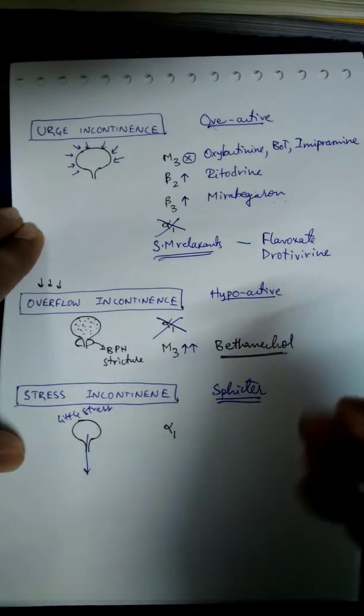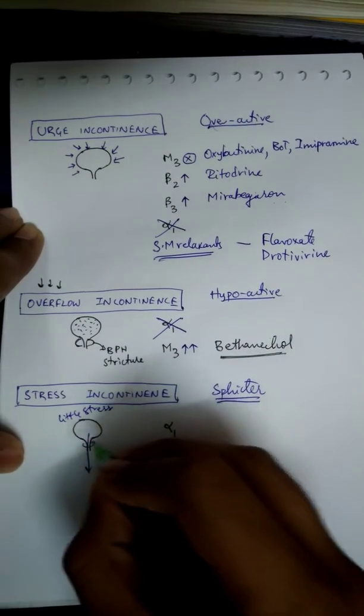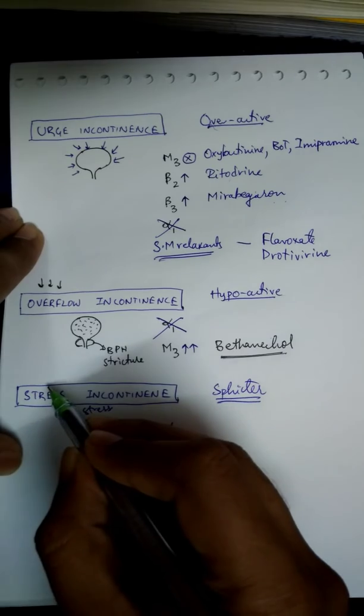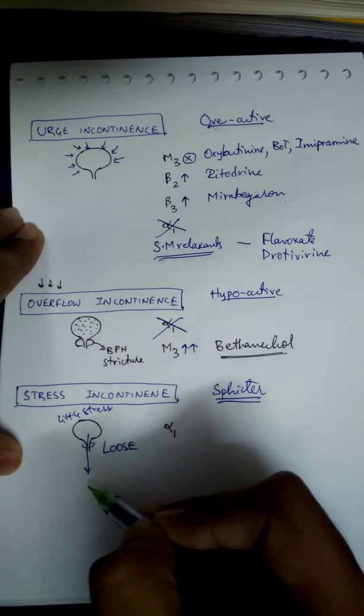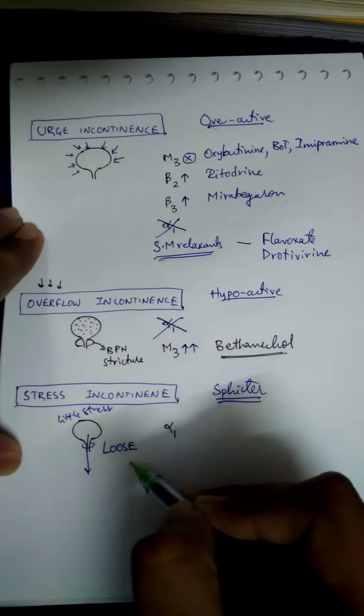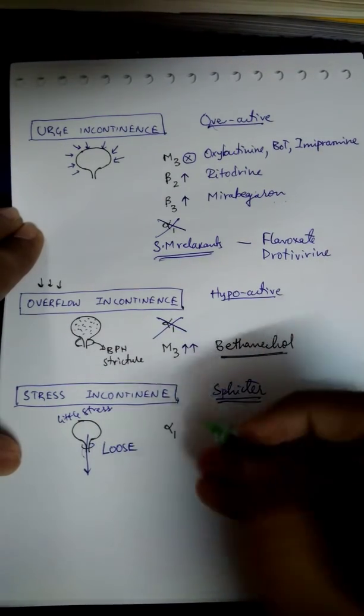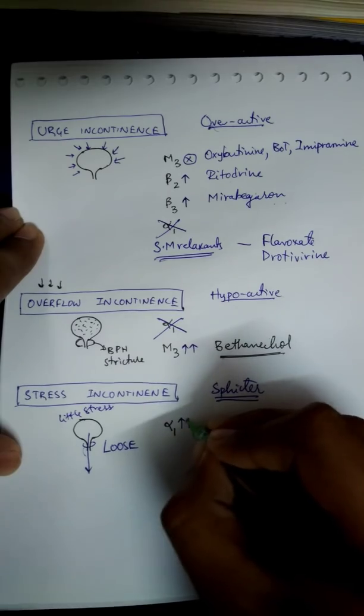This is due to loose sphincter. Even little stress can make the urine incontinent due to the sphincter. The problem is at the sphincter level - treat the sphincter, increase the tone of sphincter, give alpha 1 agonist.